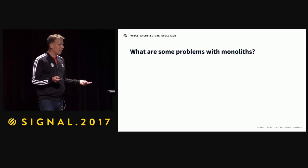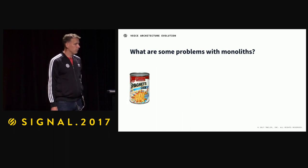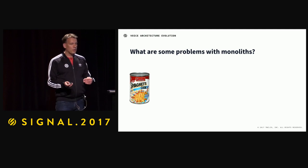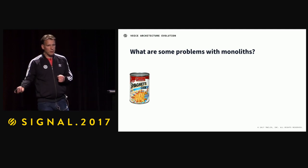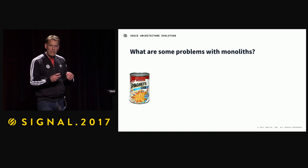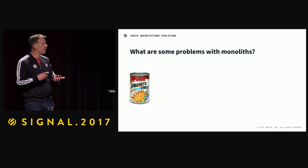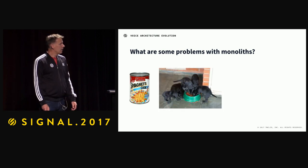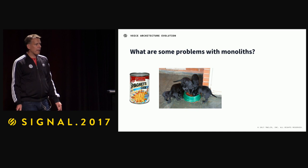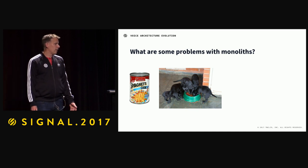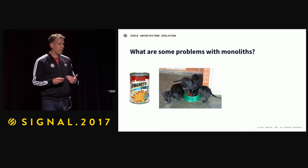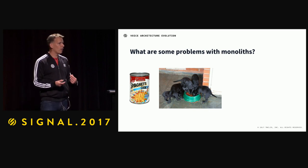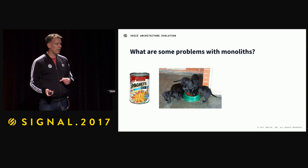It's much easier to create spaghetti code. You have different concerns in the same code base, and you typically translate that to the data store — mixing data in the same database for different concerns. You have many people in the same code base, and as you grow your team, the rate of change increases and every new deployment becomes riskier and riskier.